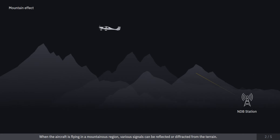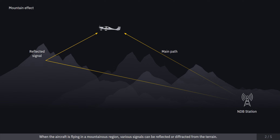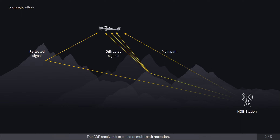When the aircraft is flying in a mountainous region, various signals can be reflected or diffracted from the terrain. The ADF receiver is exposed to multipath reception. As these signals reach the receiver, they cause erroneous bearing indications. This is known as the mountain effect.